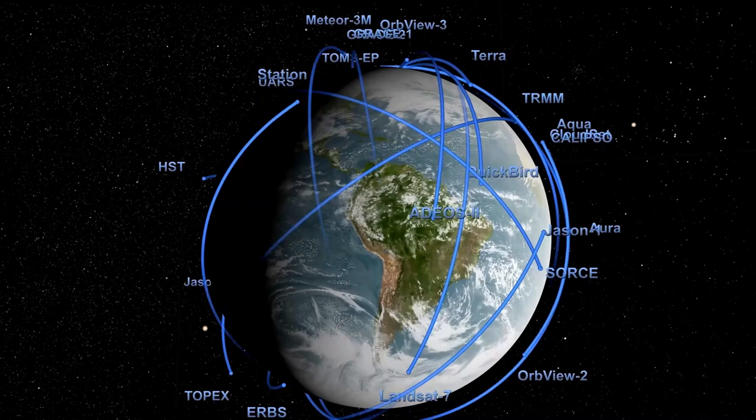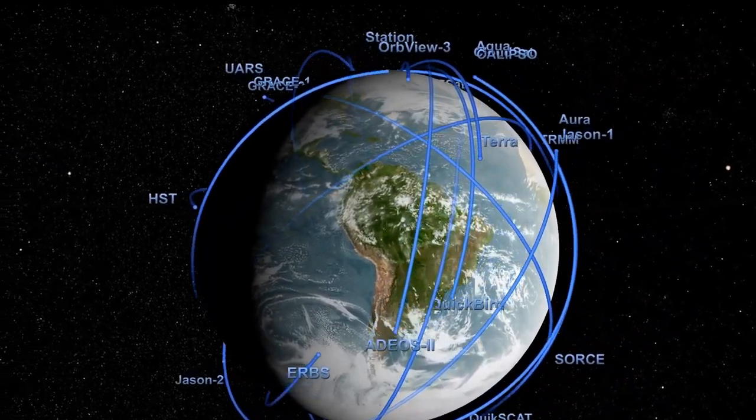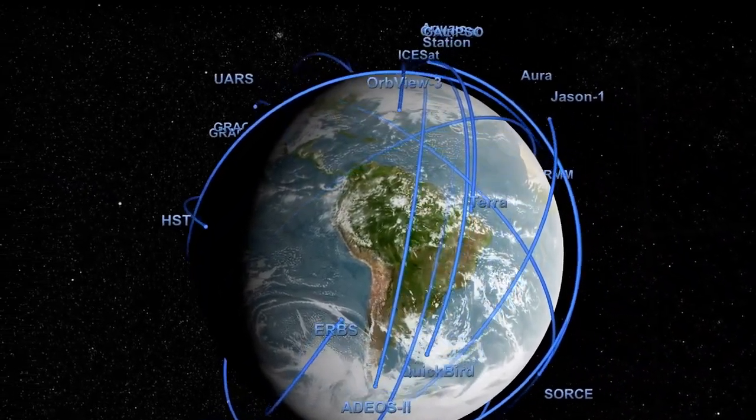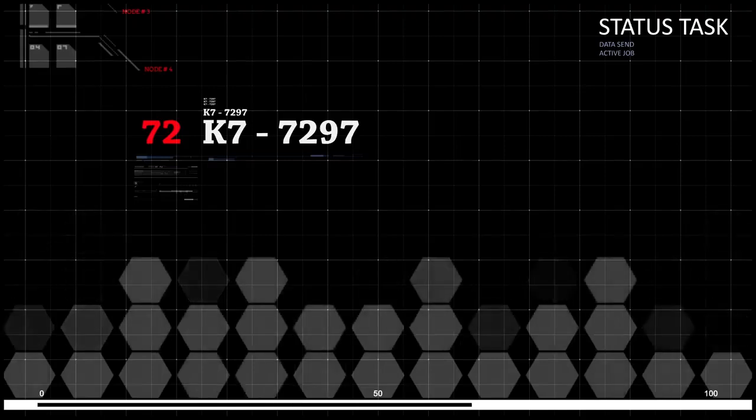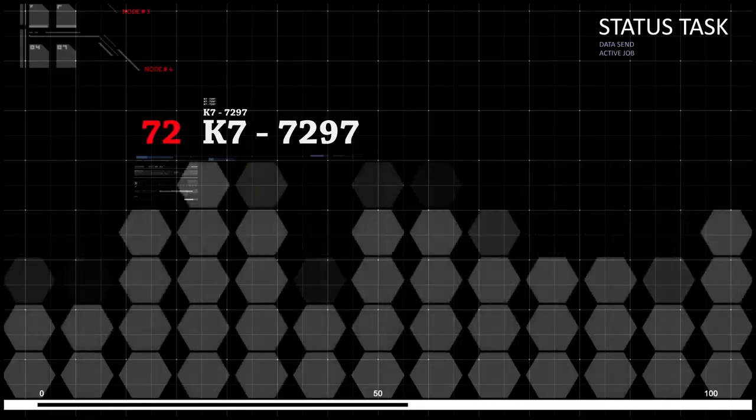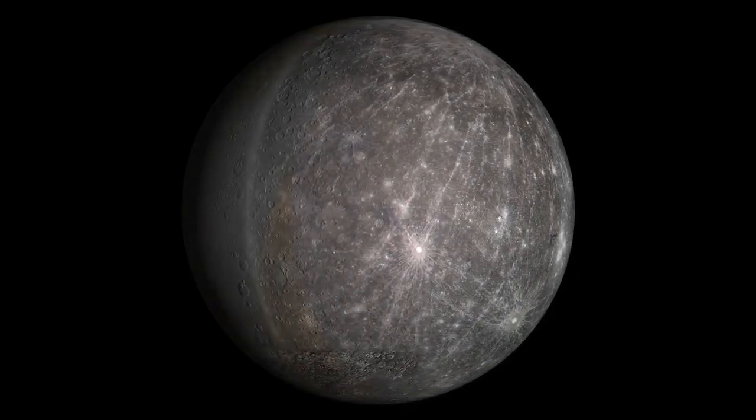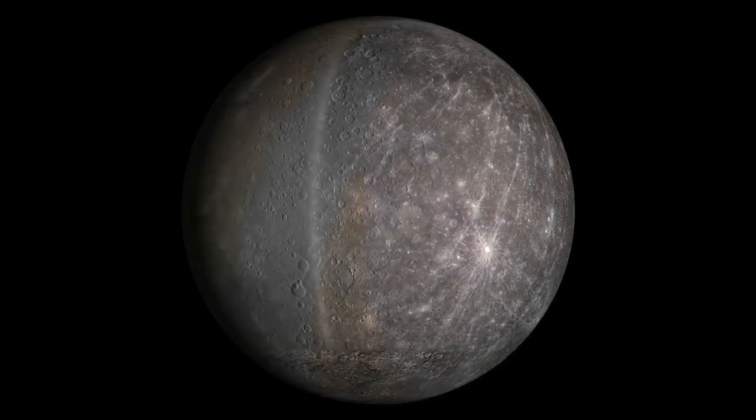However, it is important to note that K-218b orbits its star much closer than Earth orbits the Sun. While Earth is about one astronomical unit, AU, from the Sun, K-218b is only 0.18 astronomical units from its star, which is closer than Mercury's orbit around the Sun. This means that a year on K-218b lasts only 13 Earth days.